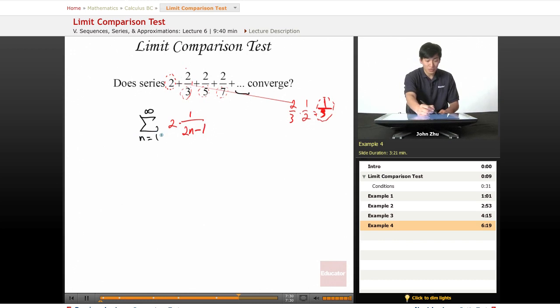So if we try n equals 1 for the first term, we're going to get 2 times 1 over 1, which works. For the second term, n equals 2, so the expression becomes 2 times 1 over, 2 times 2 is 4, minus 1 is 3. So we have 2 over 3.